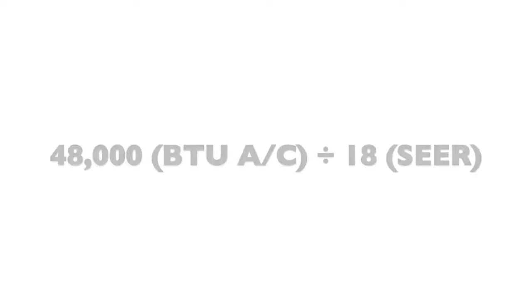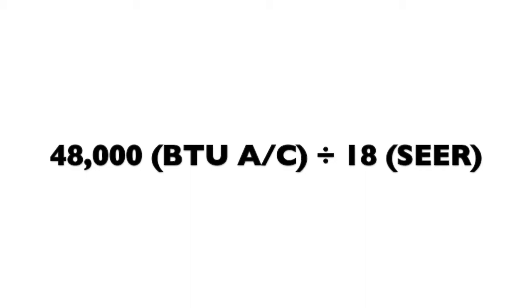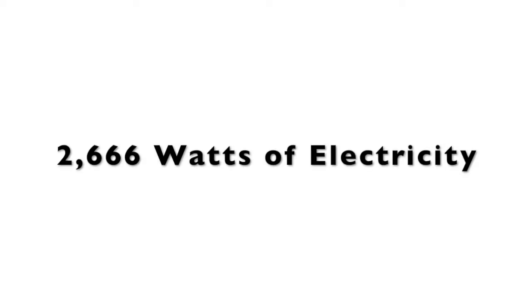I'm following so far. Okay, so I've got a 48,000 BTU air conditioner. I'm going to divide that by my SEER rating, which is 18 at my house. 48,000 divided by 18 is 2,666 — that's 2,666 watts of electricity. Can you visualize 26 hundred-watt light bulbs? That's how much electricity my air conditioner uses when it's running.